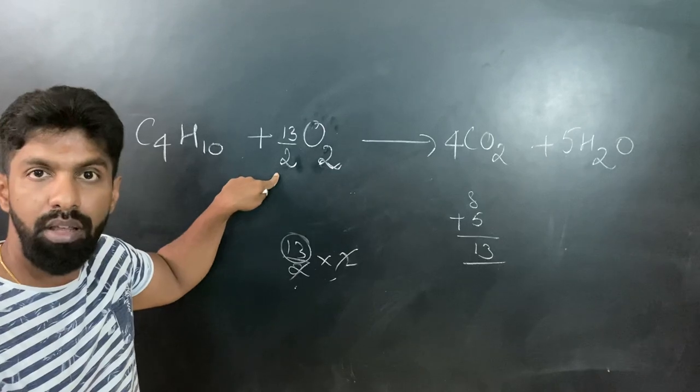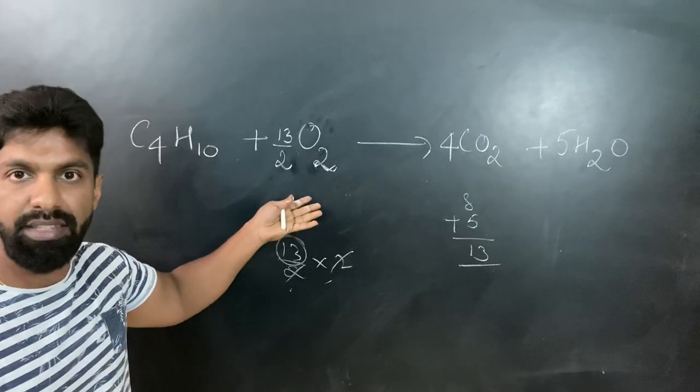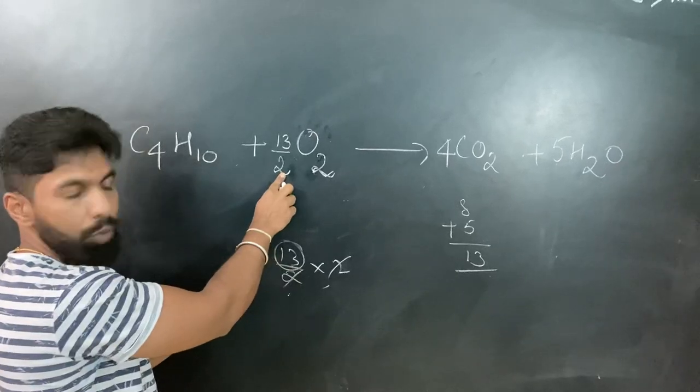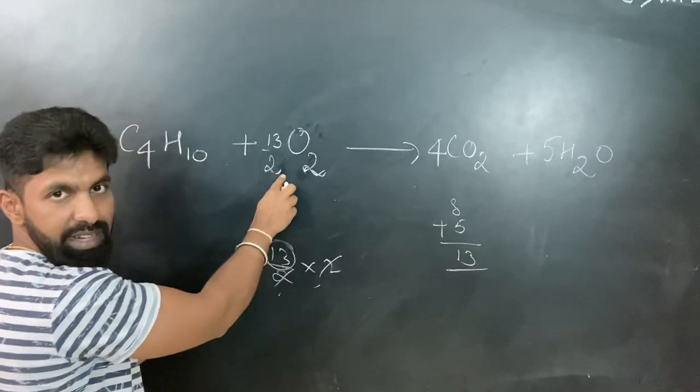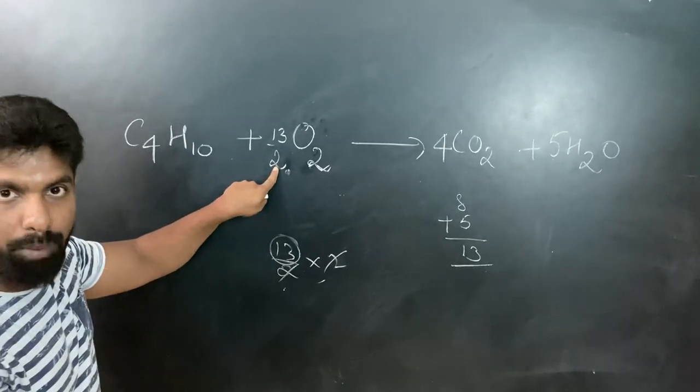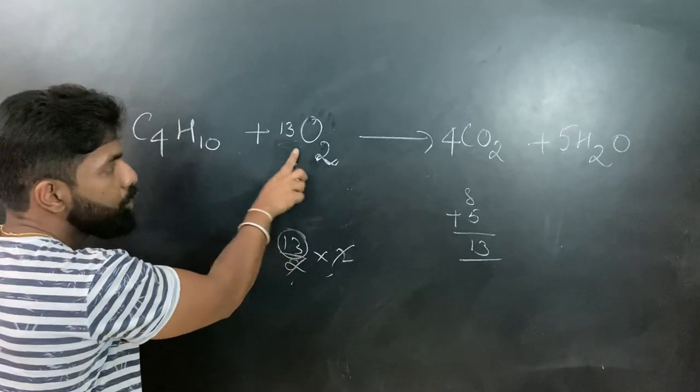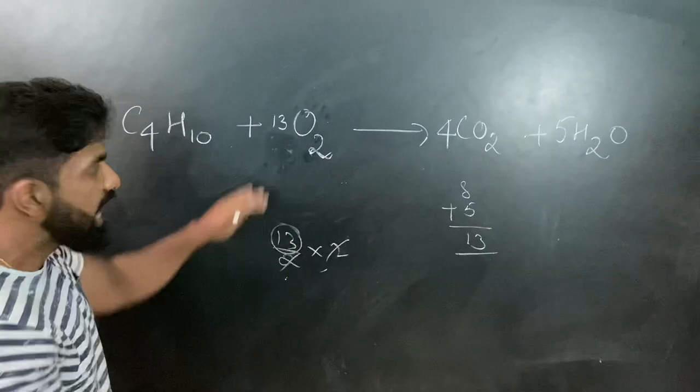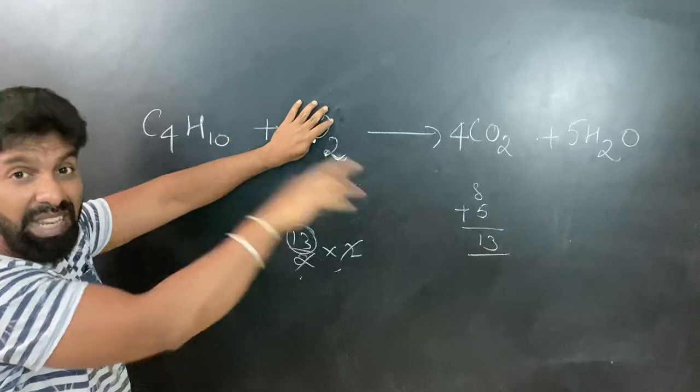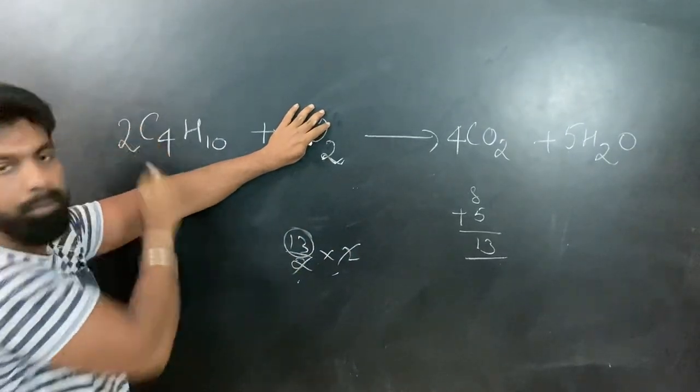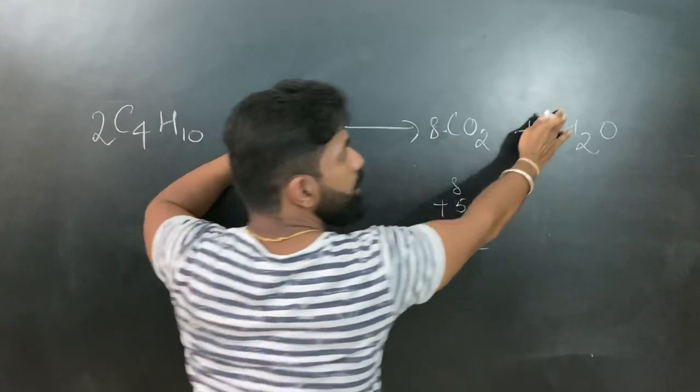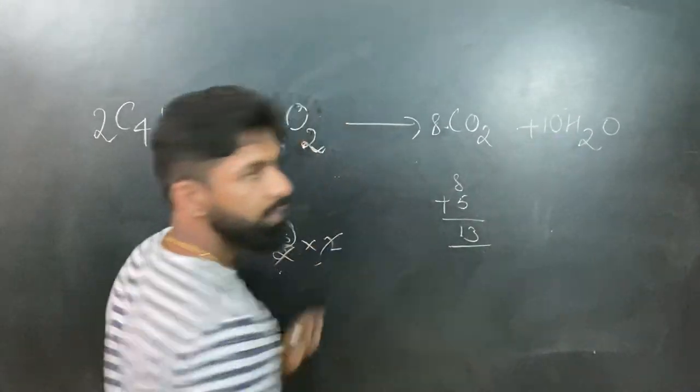Now 13 by 2 if I write it's not acceptable - we do not write fractions for balancing. So what I do is I know it is 13 by 2, but to remove this denominator I multiply the whole equation with whatever is present in the denominator. That means I do not write the denominator here, I keep that denominator in my mind and balance the remaining elements with that number 2. Here do not do anything here - 4 times 2 is 8, 5 times 2 is 10, and the equation has got balanced.